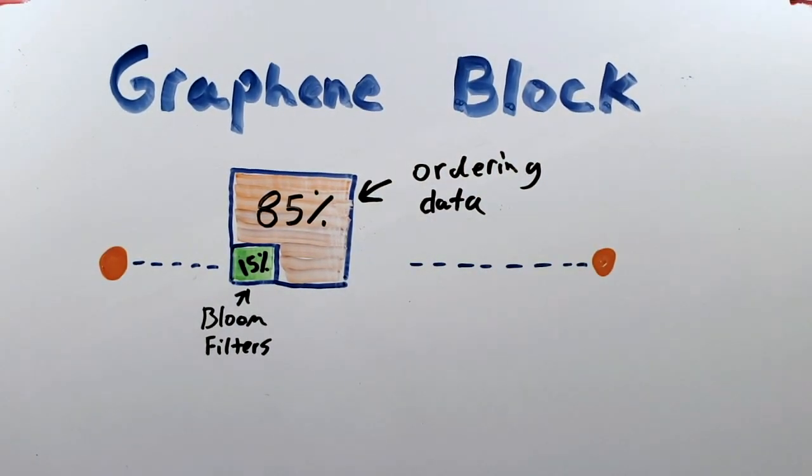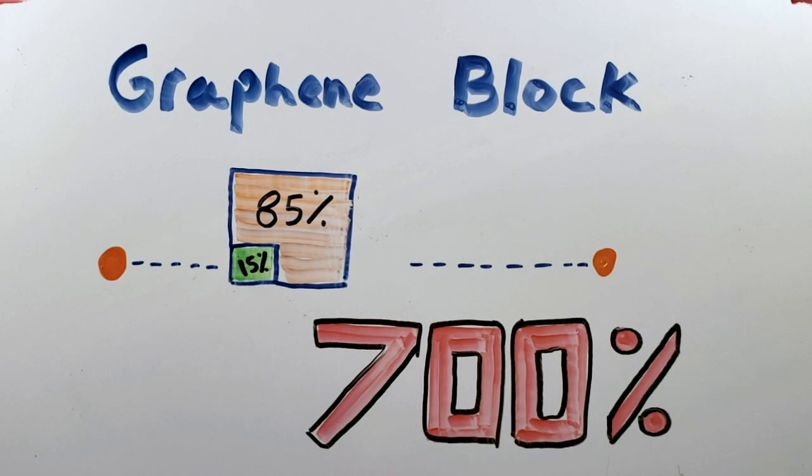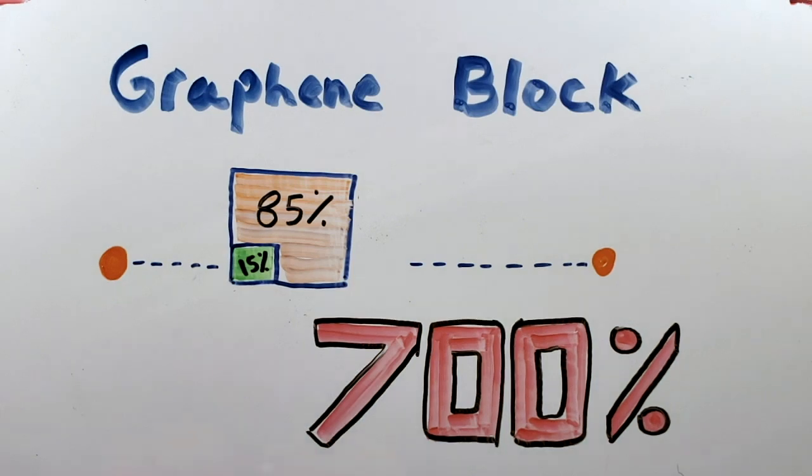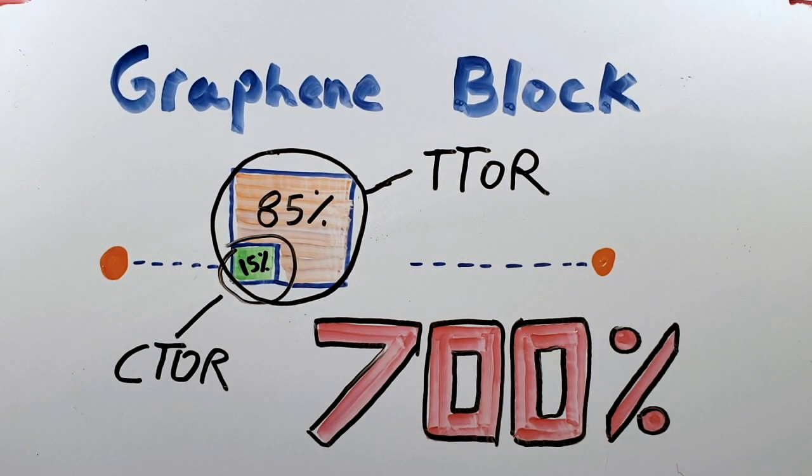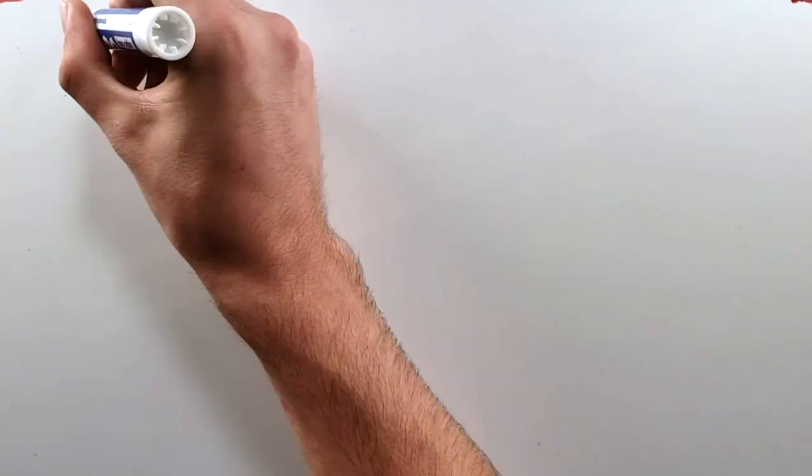If the transactions are in a canonical order, we only need to know what transactions are in the block. Canonical ordering allows Graphene blocks to be around 7 times more efficient. This isn't one of those changes where you might get 10 or 20% increased performance. We're talking about 700% for large blocks.